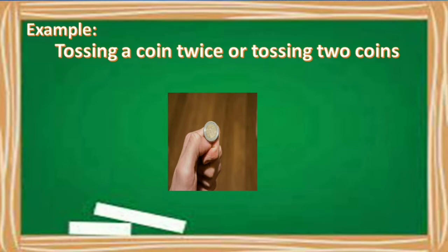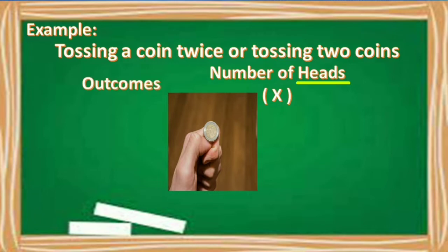Say for example, ang pinili natin is number of heads. So number of heads as our random variable. So para makukuha natin yung mga values natin dito sa ating random variable X, first, kailangan natin ng outcomes. Okay. So pagka nag-toss tayo ng isang coin, followed by another coin, ano yung isang posibleng lumabas? Pwedeng tail, tail.